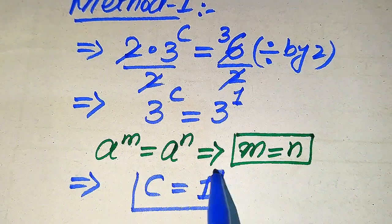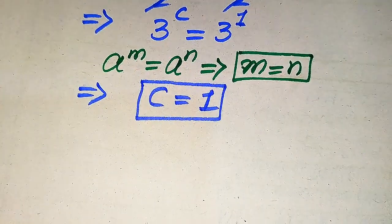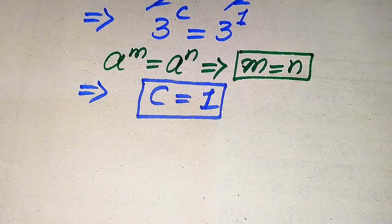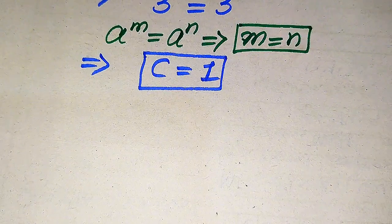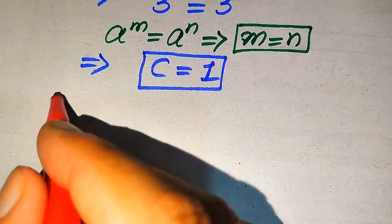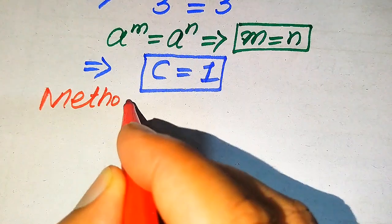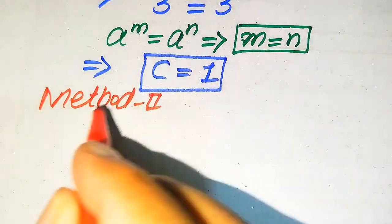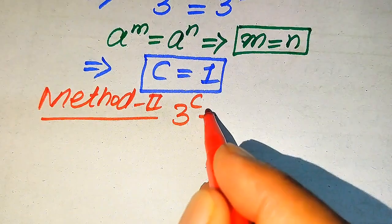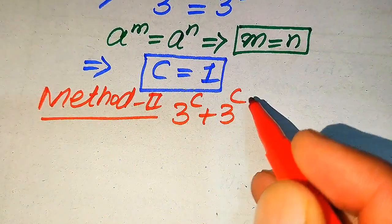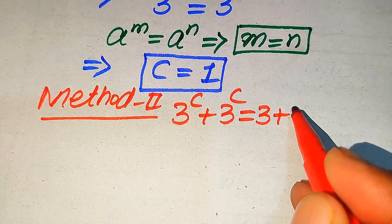So this is the value of C we get from the first method, which is C equals 1. Now we solve this problem using a second method. For the second method we copy down the given question statement: 3 to the power of C plus 3 to the power of C equals 3 plus 3.